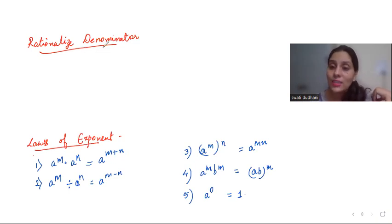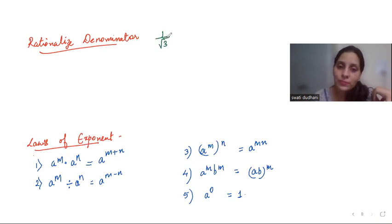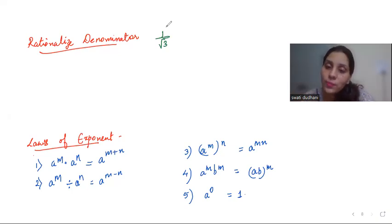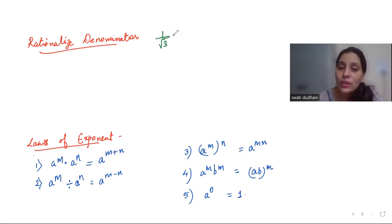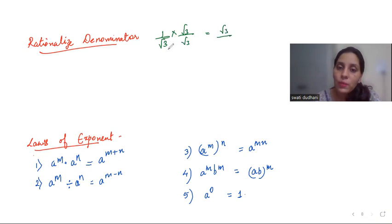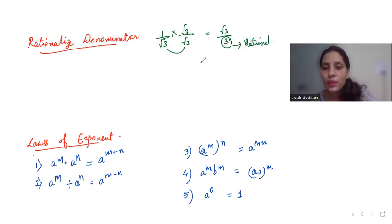Next, a very important concept: rationalizing the denominator. We rationalize only when we have an irrational number in the denominator. For example, 1 by root 3 — root 3 is irrational. To rationalize, when you have a single irrational number, multiply both numerator and denominator by that irrational number. Root 3 over root 3 into root 3 gives root 3 over 3 — now the denominator is rational.